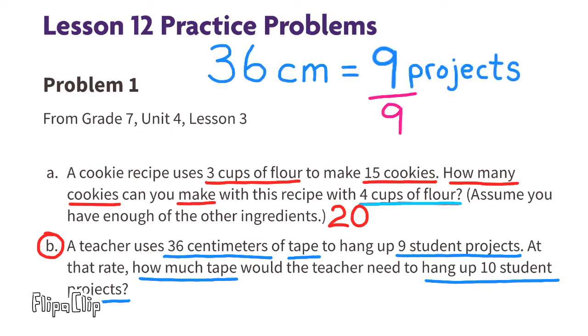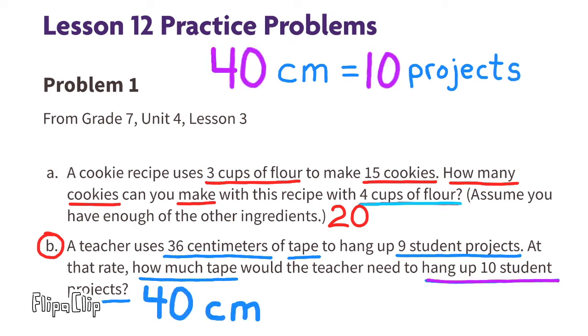9 divided by 9 is 1, and 36 divided by 9 is 4. Now we can multiply: 1 times 10 for 10 student projects, and 4 times 10, which gives us 40 centimeters of tape. To hang 10 projects, the teacher is going to need 40 centimeters of tape.